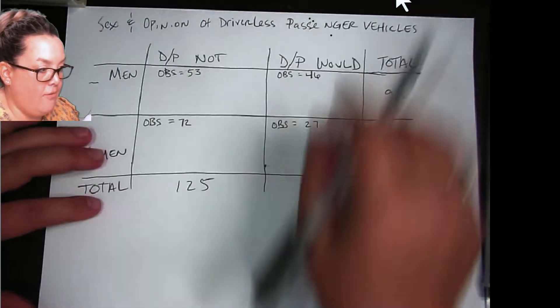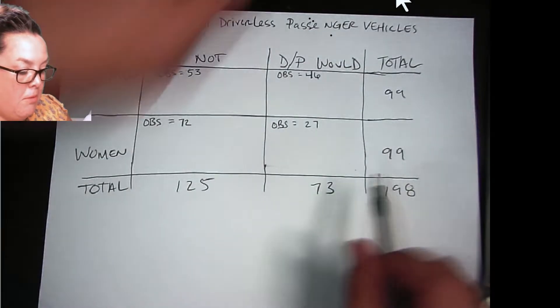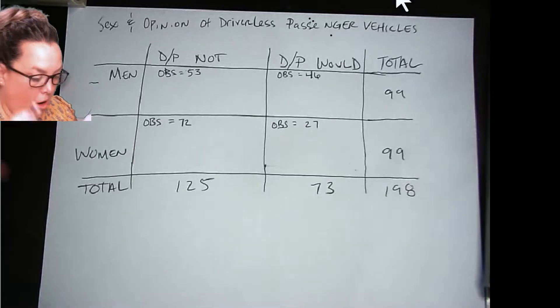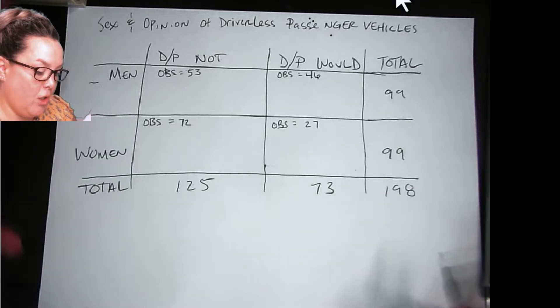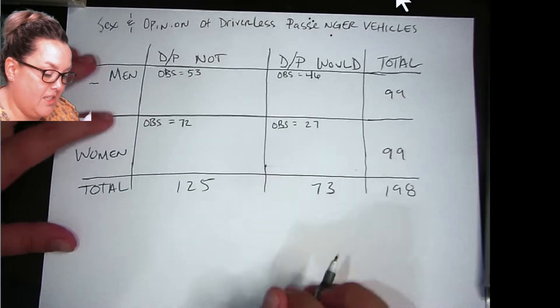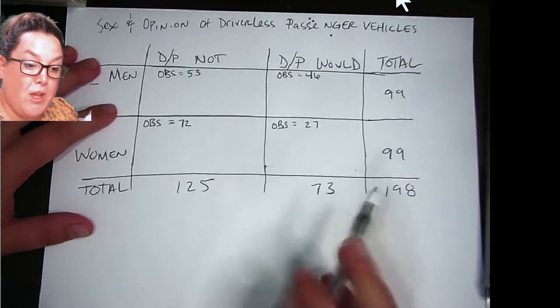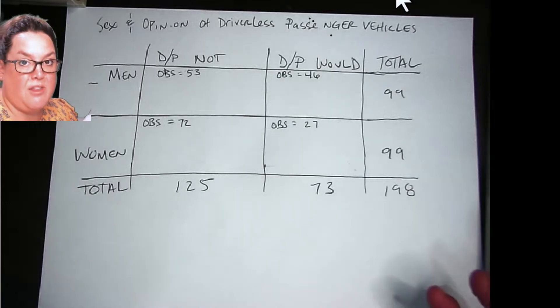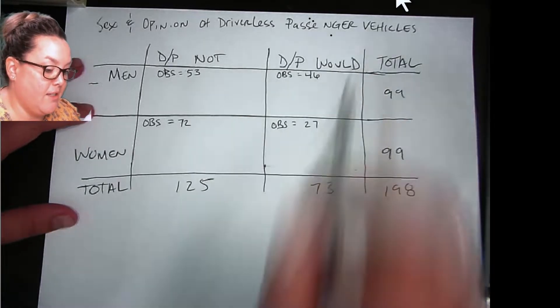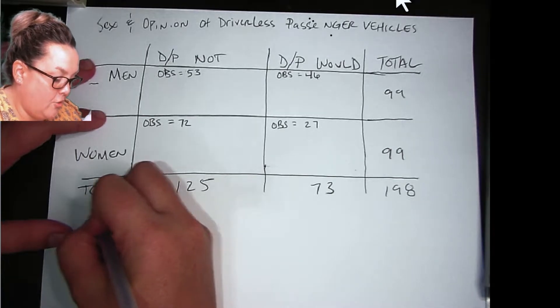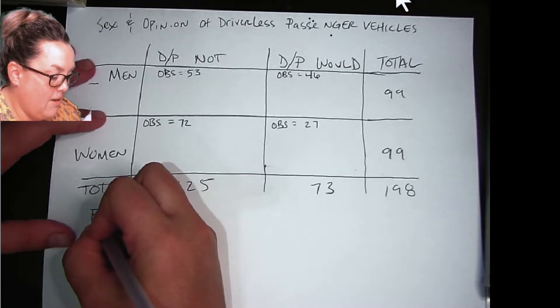Now I have recreated this table, and remember all of the values that are included so far are what we call observed counts. So we're going to use those later to see if there's a big enough difference between what we observe and what we expect to see to say that there is an association between sex and opinion on riding in a driverless passenger vehicle.